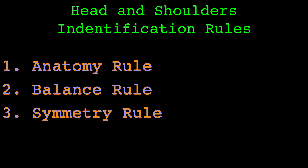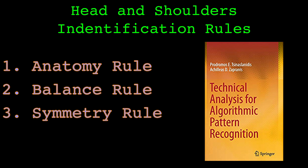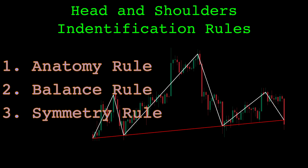The third rule is checking for symmetry. The time between each shoulder and the head should be comparable — if one is greater than 2.5 times the other, we disqualify the pattern. These balance and symmetry rules are from the book 'Technical Analysis for Algorithmic Pattern Recognition'. I am a big fan of these authors; they have many cool papers along with this book.